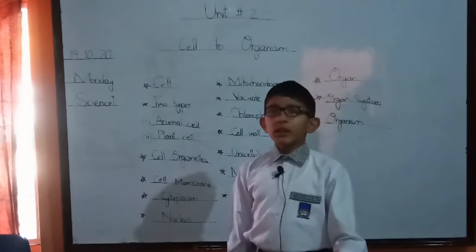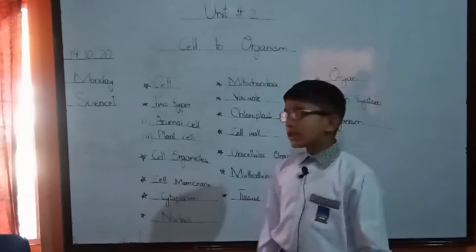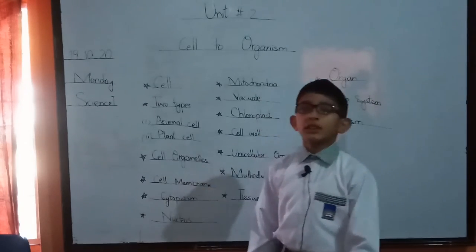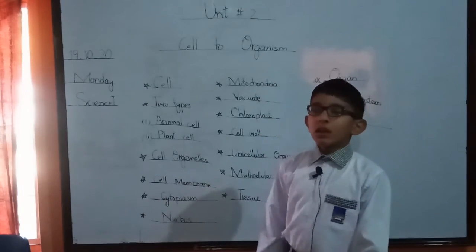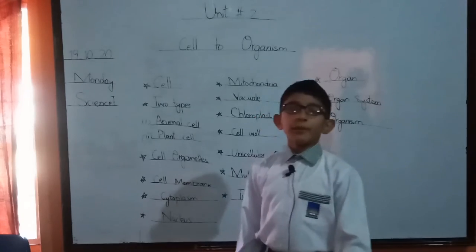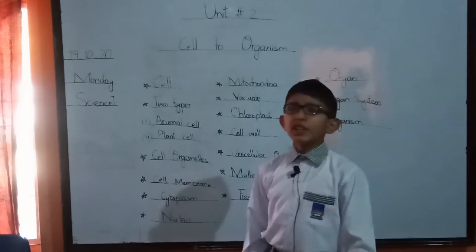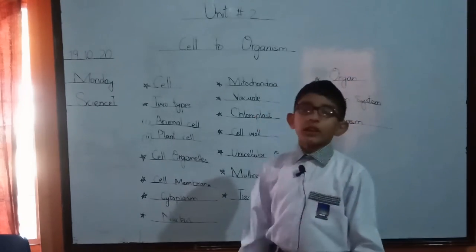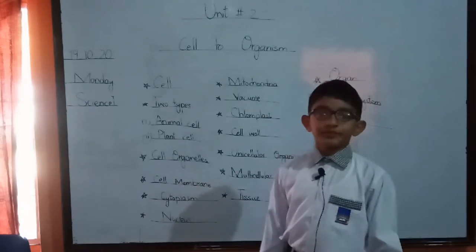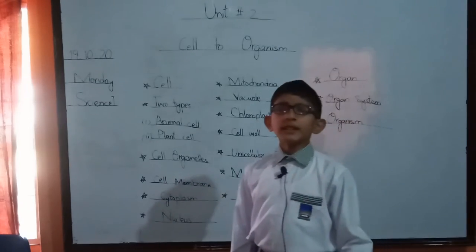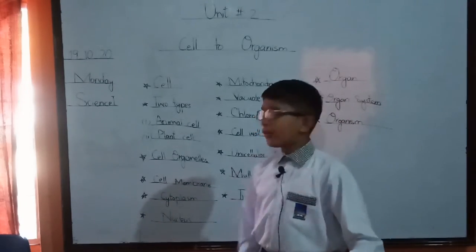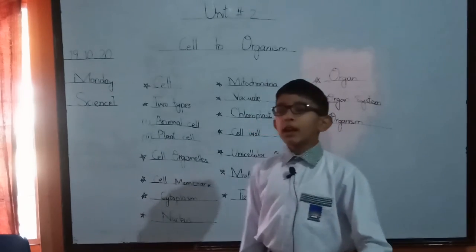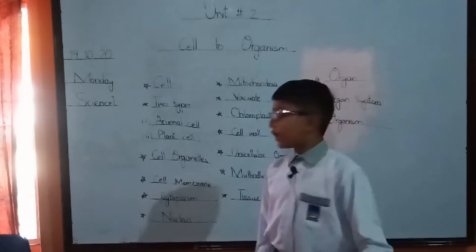It is always present in the plant cell. Now I will tell you about unicellular organisms. Those organisms which are made up of one cell are called unicellular organisms, and those organisms which are made up of two or more cells are called multicellular organisms.